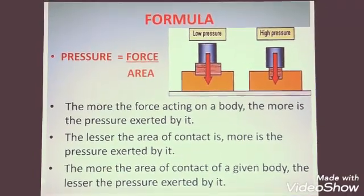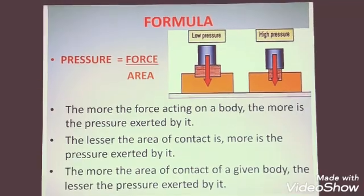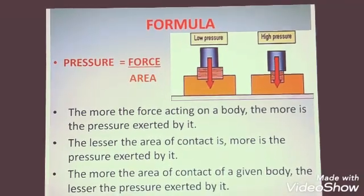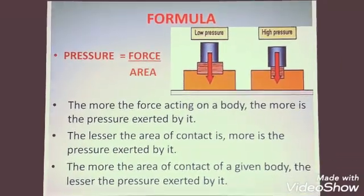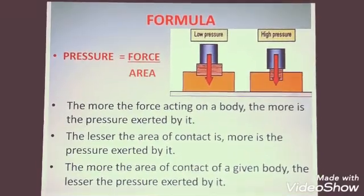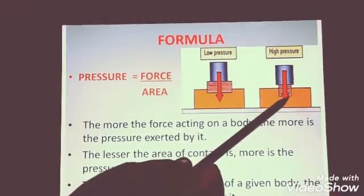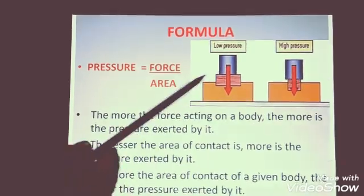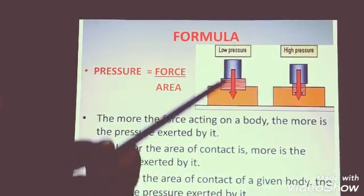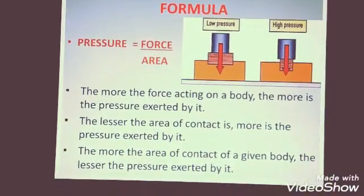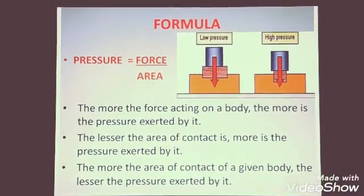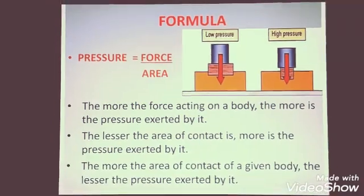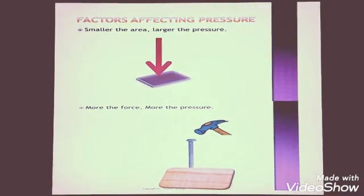But what about area? Because area is in the denominator, therefore pressure and area are inversely proportional to each other. As you can see in this picture, there are two blocks. One block is having a smaller area where the pressure applied is more. In this block of wood, the area is larger and so the pressure applied is lesser. The pressure depends upon the area of contact. If the area is less, pressure will be more. If the area is more, pressure will be less.